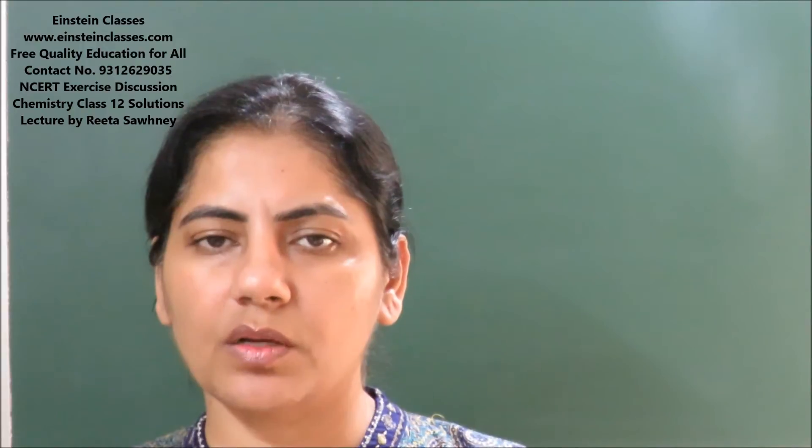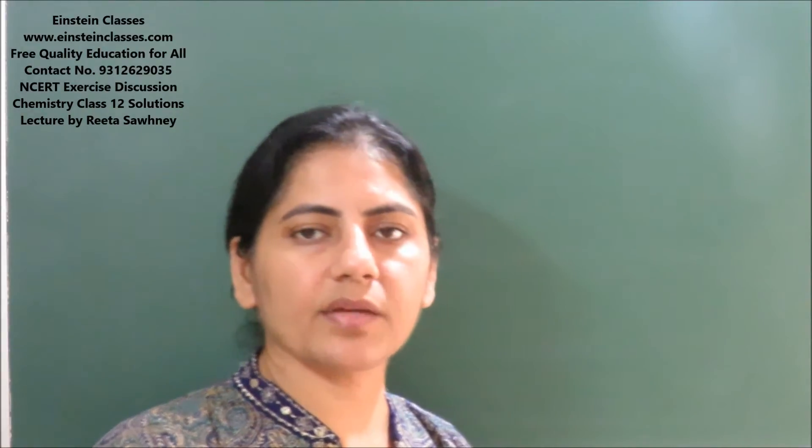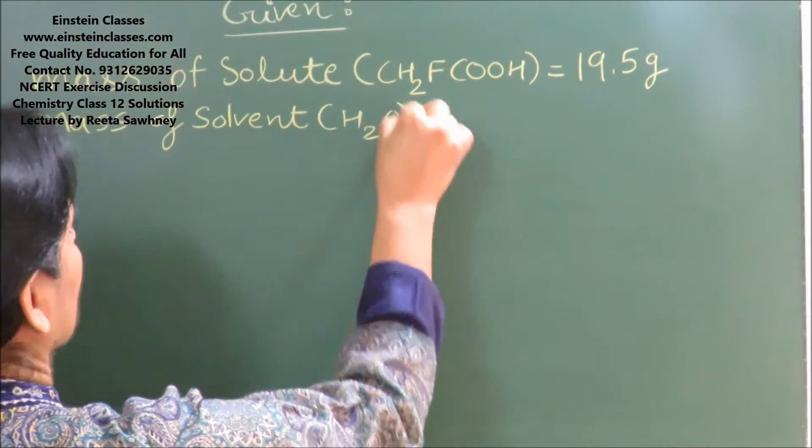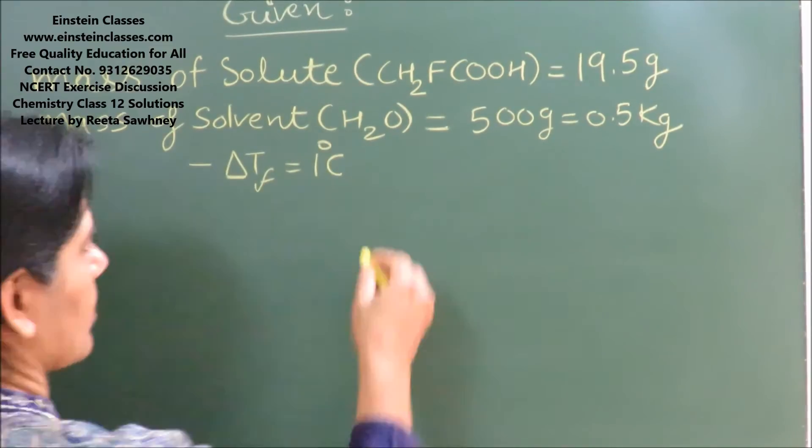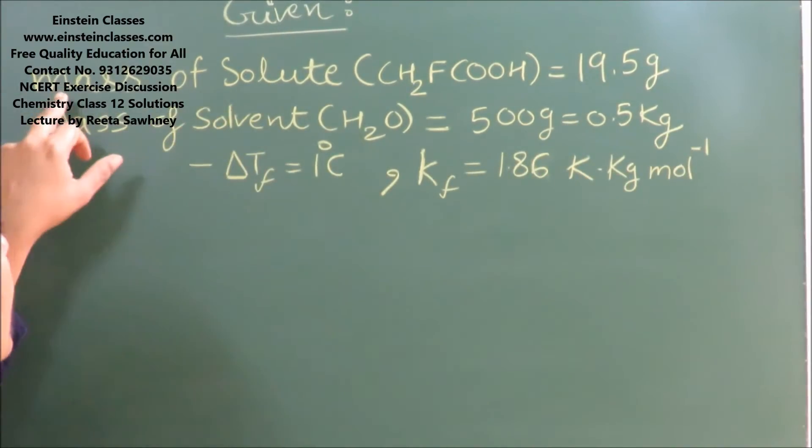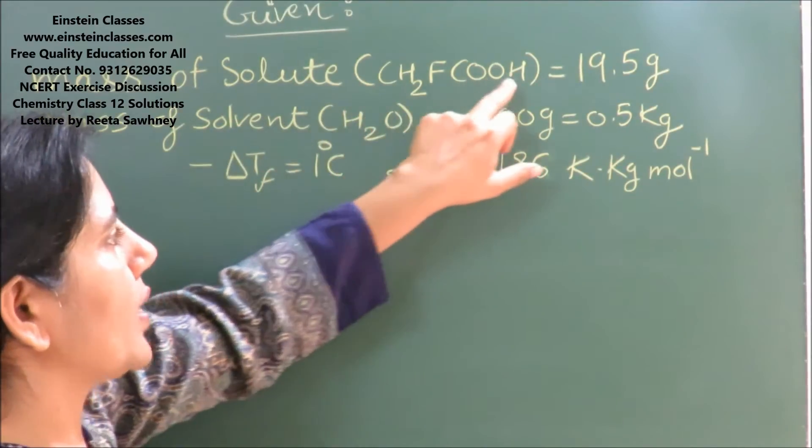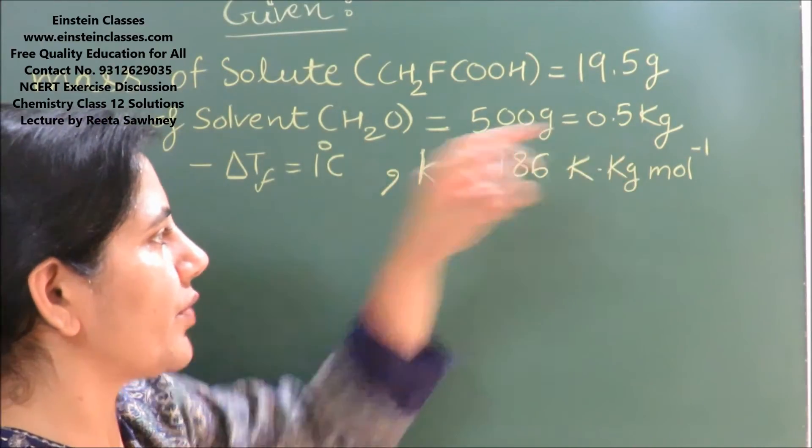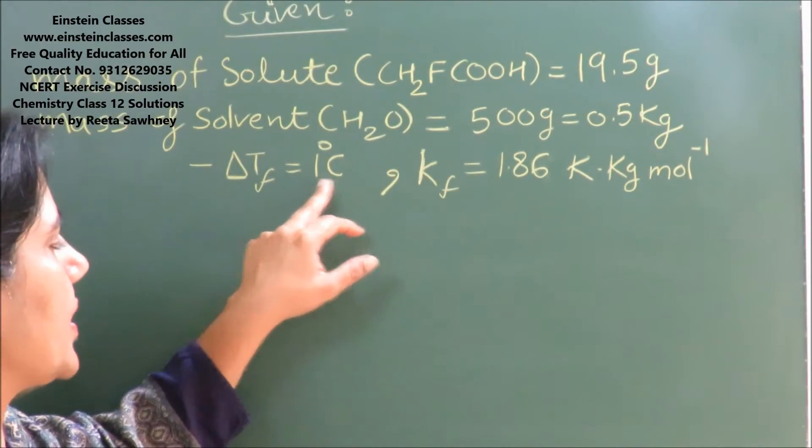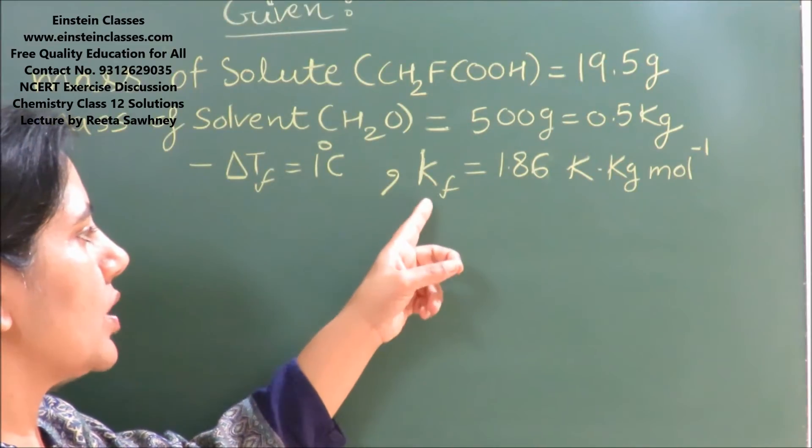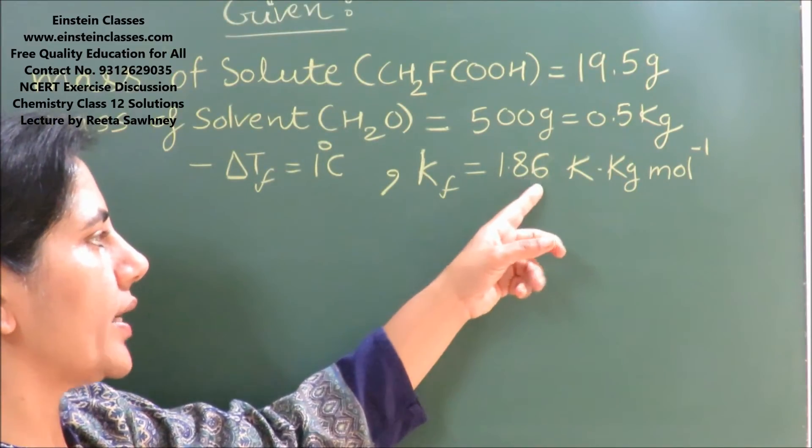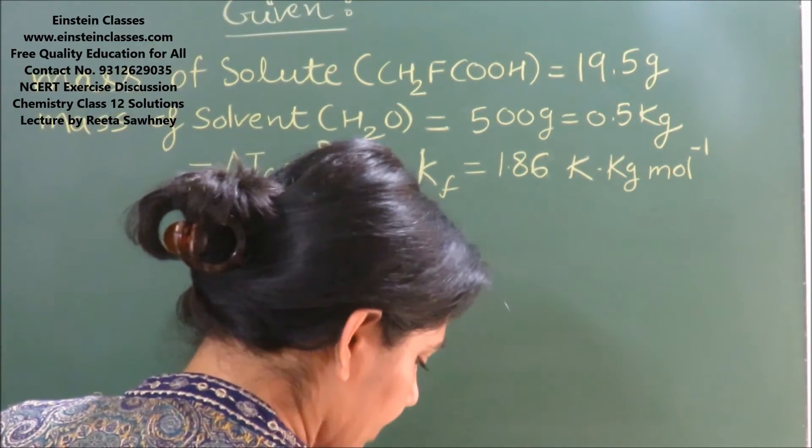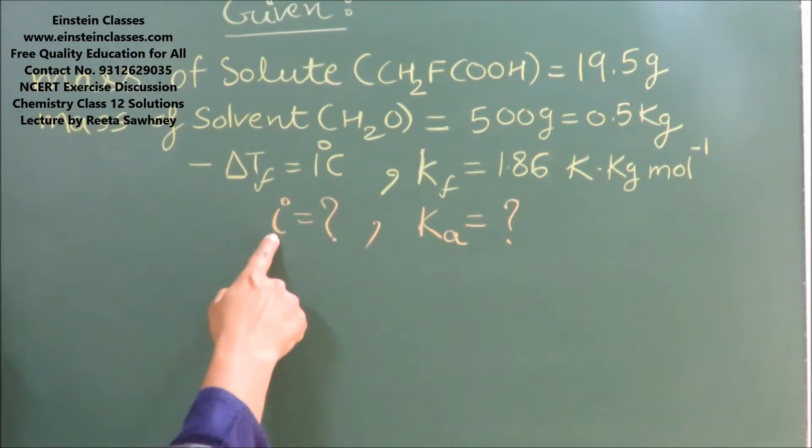Firstly, we are writing what is given to us. Mass of solute, that is monofluoroacetic acid, is 19.5 gram. Mass of solvent, that is water, is 500 gram or 0.5 kg. Depression in freezing point is 1 degree C, and the Kf molar depression constant for water is 1.86 Kelvin kilogram per mole. Our aim is to find out the van't Hoff factor i and the ionization constant of the fluoroacetic acid.